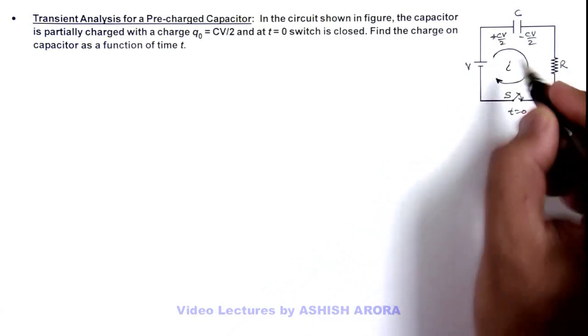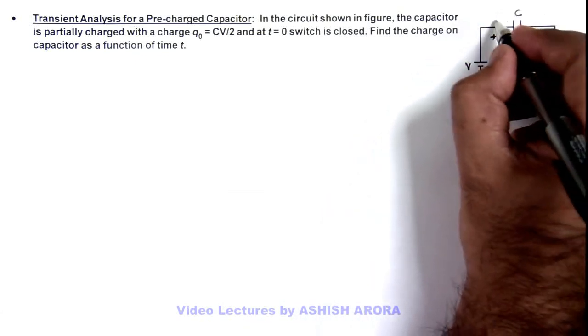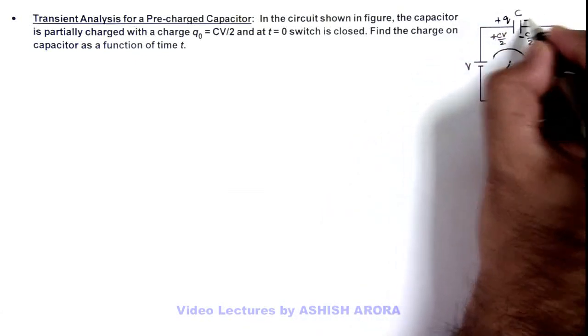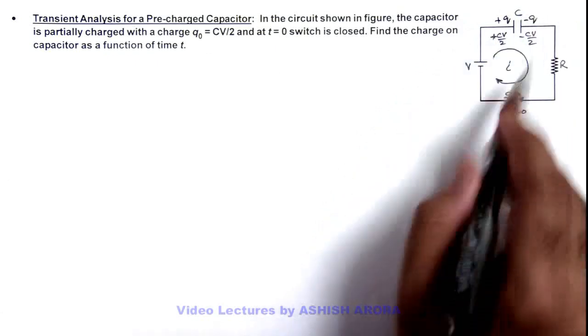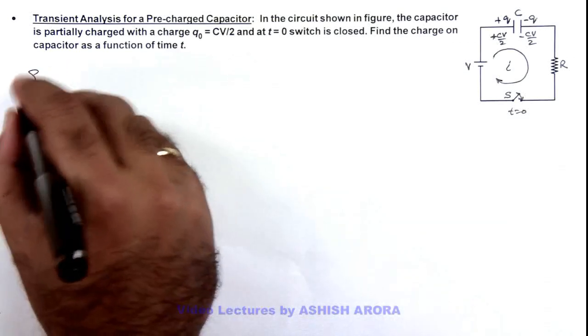From the battery to supply more charge on capacitor, its charge will increase. At any instant of time it is +q and -q. Then here we can write directly the KVL equation.